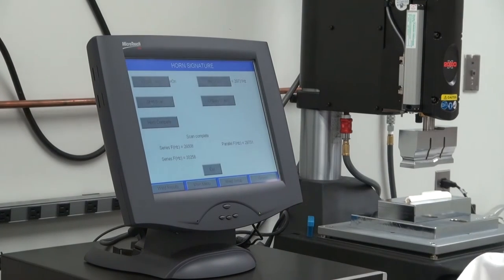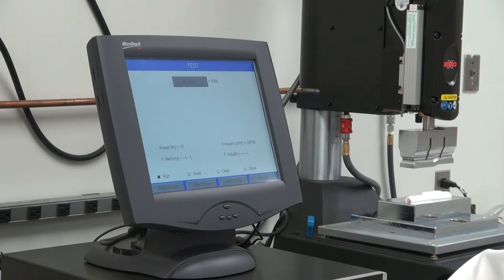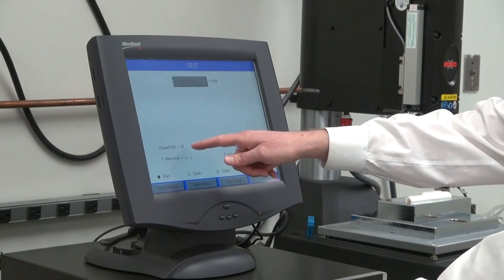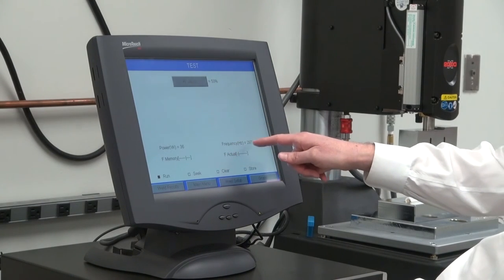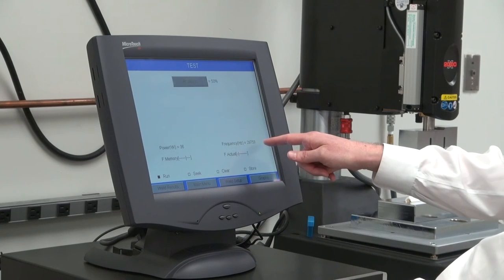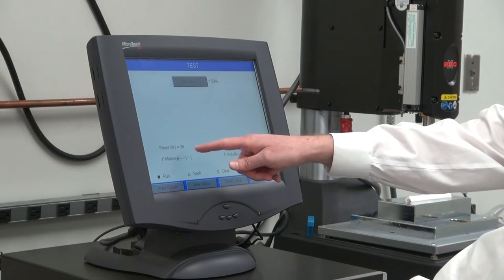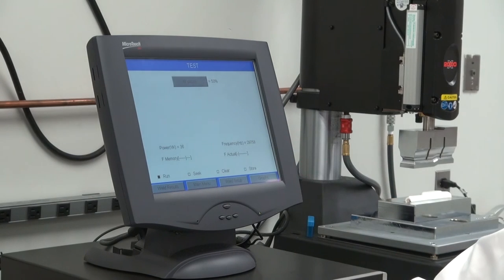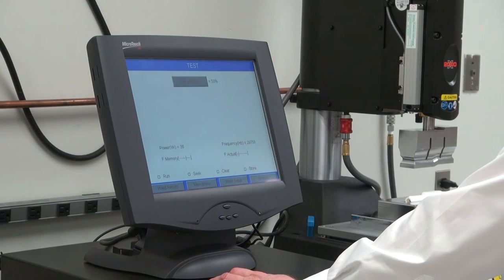From this point, I can do a test of the horn. If I press the test button, I'll see the power here. This is 50% amplitude I'm running at, 36 watts, and the frequency that it's running, 29.758 kilohertz. 34 watts is about right for the power for this. That's a good frequency right here. This horn is good. I'm ready to go.